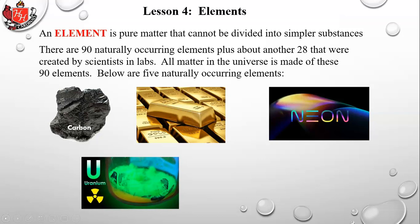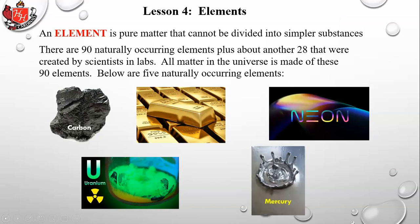Uranium is the largest naturally occurring element in the universe as far as anyone knows. Anything above uranium is not naturally occurring — it's unstable and won't stay together. Uranium can be used for nuclear energy.